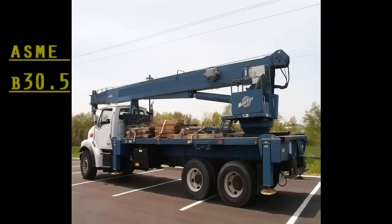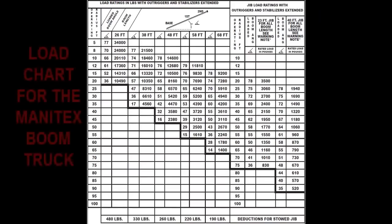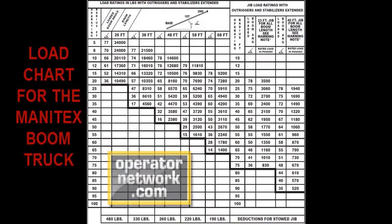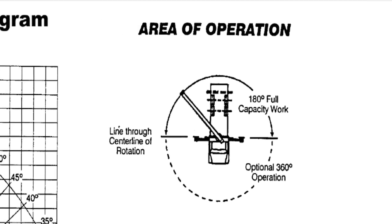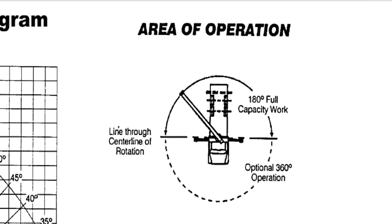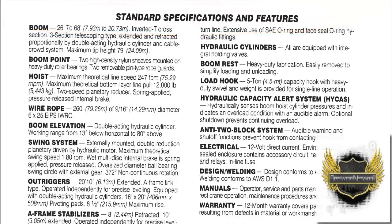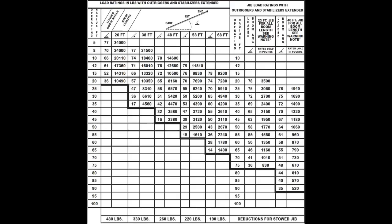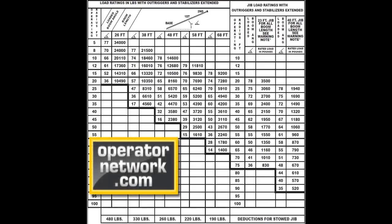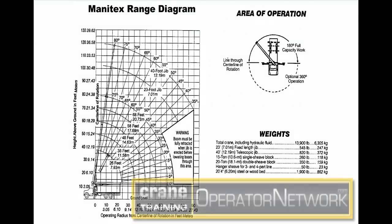Every crane built to meet ASME B30.5 is required to have a load chart which specifies the crane's capabilities. It goes into great detail describing the features and how its lift capacity varies when considering distances and angles. Failing to consult a crane's load chart before making a pick can result in some very dangerous scenarios.